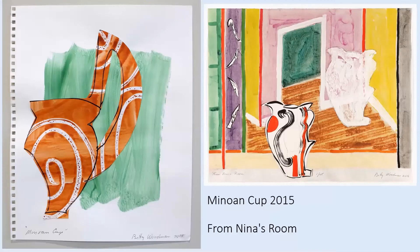Here are two more of her pieces. My favourite on the left is called Minoan Cup from 2015. You can see the white lines with dots — that's using a wax resist, a very common ceramics technique where you put wax on your pottery after its first firing, and wherever the wax is, it resists any glaze or colouring you add. I just love the gesture of it — a really beautiful, simple picture. I love the texture of the brush stroke; it's almost like there's soap in the paint. And then Nina's Room from 2016 — I love the colour, the layout, the vase forms in it.